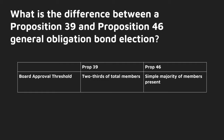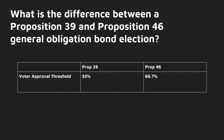First, under the board approval threshold, Prop 39 requires two-thirds of total members, while Prop 46 only requires a simple majority of the members present. Prop 39 requires 55% voter approval, whereas Prop 46 requires two-thirds.